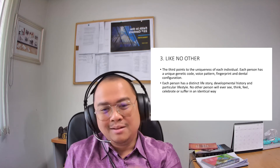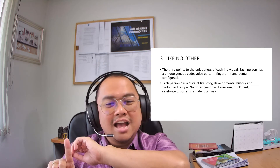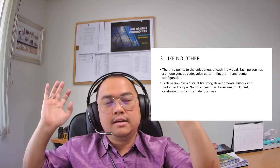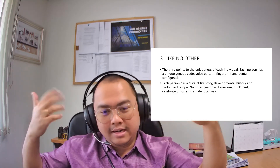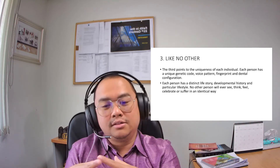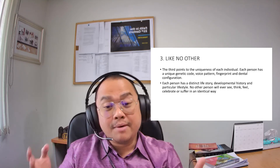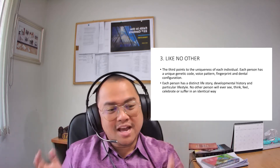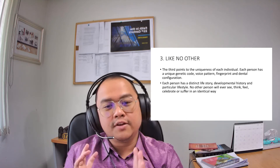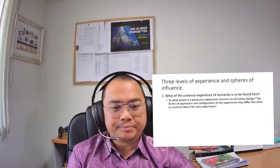Remember, everybody has three characteristics. They are like everyone — they are born, they are dependent on their parents, they grow, and they die. Everybody is also like some others — they are grouped within cultures that shape their customs, values, and practices. But everybody is also like no other, which is very unique only to them — their voice pattern, fingerprint, dental configuration, life story, developmental history, and lifestyle are specific to them only.